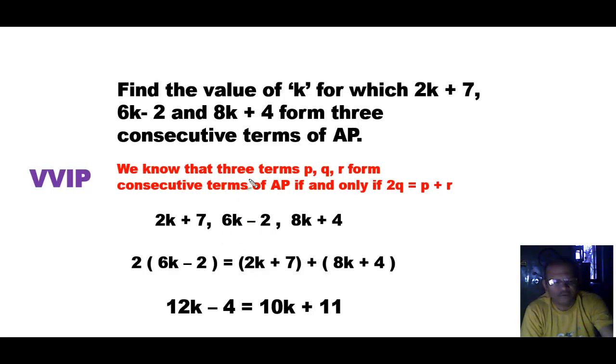On the right hand side we will add, so 2k plus 8k, that will be 10k, and 7 plus 4, that will be 11. So we get 12k minus 4 equals 10k plus 11.